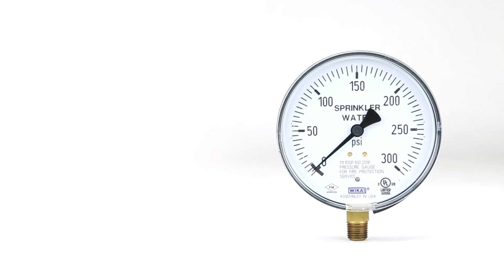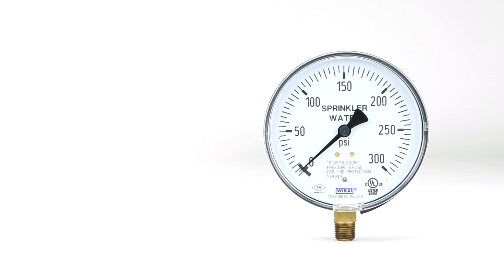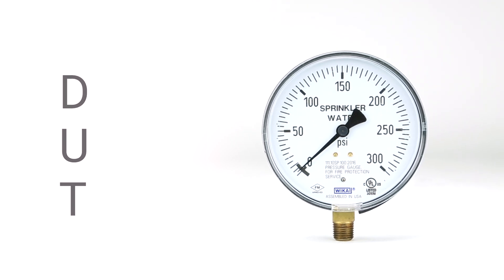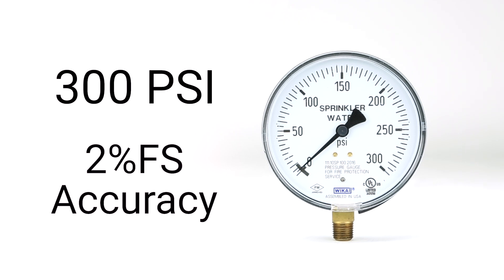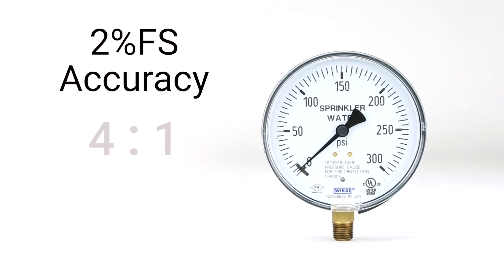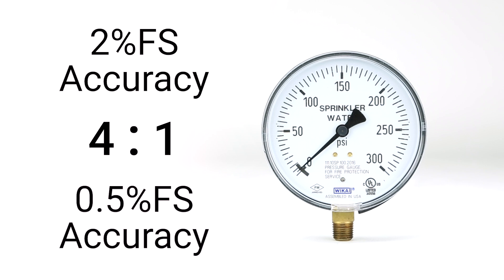To begin calibration, we select our dial gauge, also called the device under test, or DUT. It measures up to 300 psi, with a maximum accuracy of 2% of its full span. In order to do a 4 to 1 calibration, we will need a reference that is at least 4 times more accurate. In this case, that's 0.5% accuracy or better.